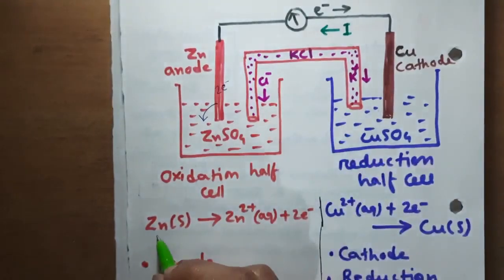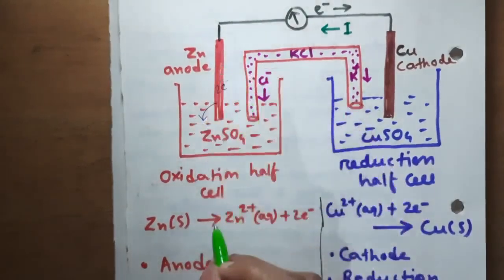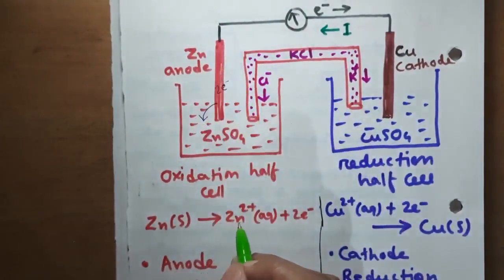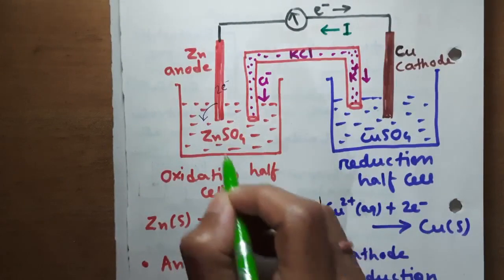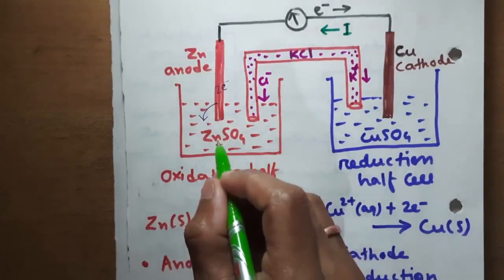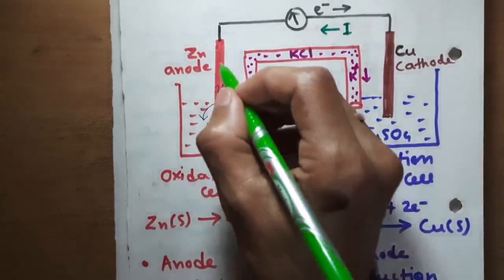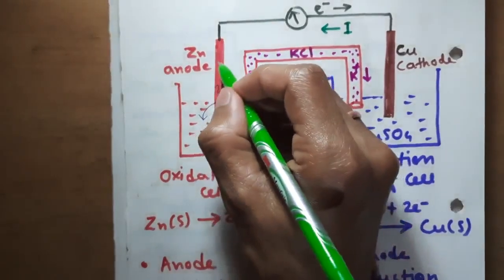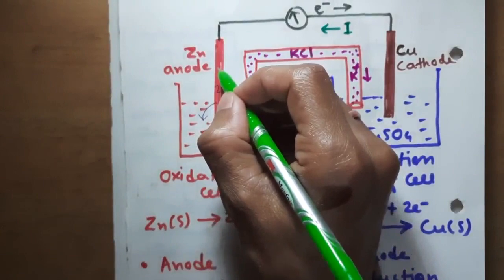Zinc solid in the electrode sends zinc 2 plus ions into aqueous solution plus 2 electrons. These 2 electrons are left behind in the electrode.